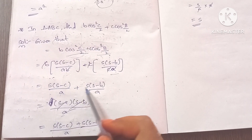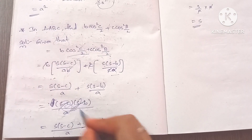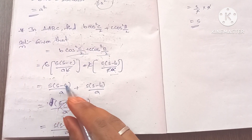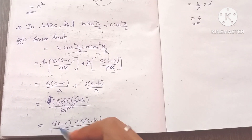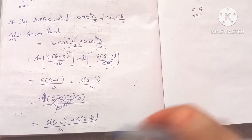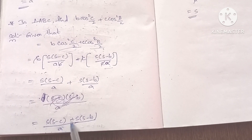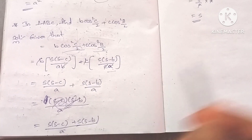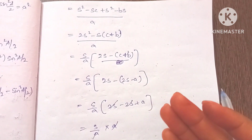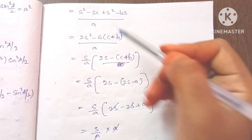After substituting and canceling b and c in the denominators, we get s(s-c)/a + s(s-b)/a. Expanding gives s² - sc + s² - bs all divided by a, which is 2s² - s(b+c) all over a. Taking s as common: s by a into (2s - (b+c)).